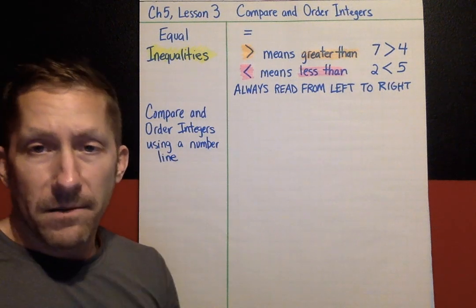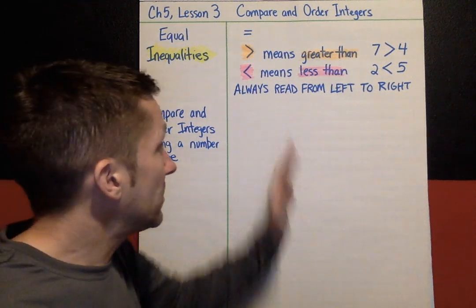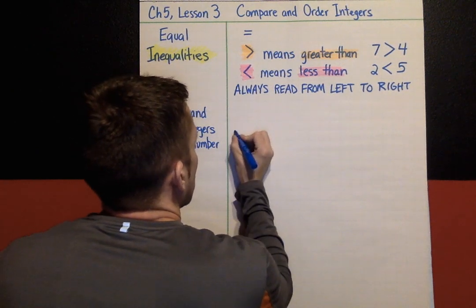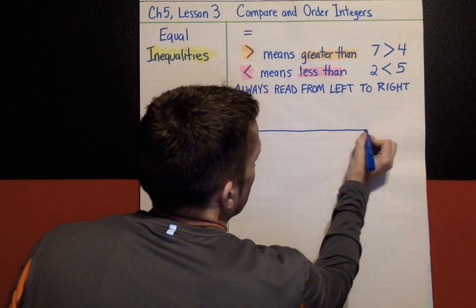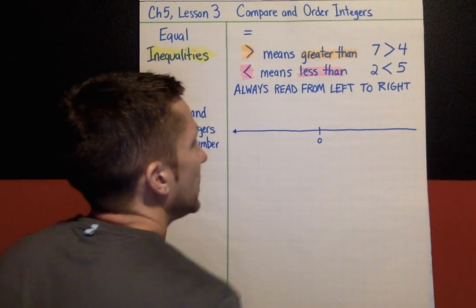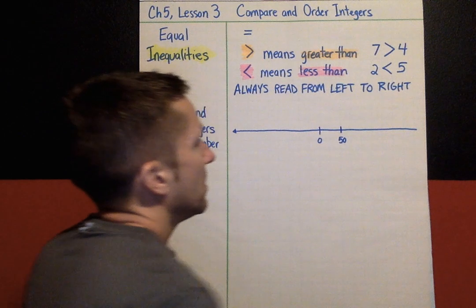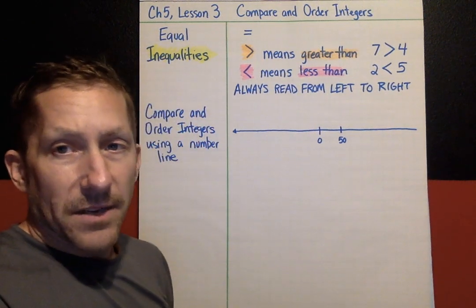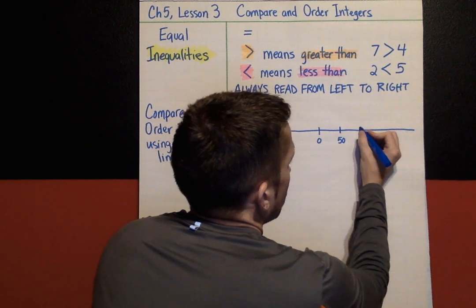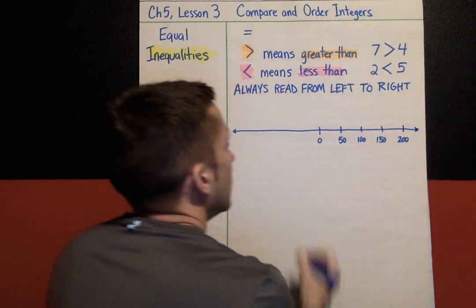We're not always going to draw a number line, but in your mind you should be picturing one. I'm going to use an example number line. I'll put zero in the middle, and I'm going to count by 50s instead of ones. When making a number line, your jumps have to be the same size. So counting by 50s: 50, 100, 150, 200.